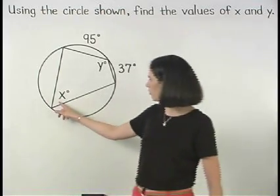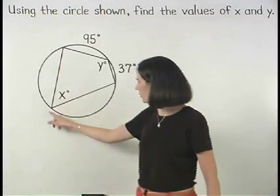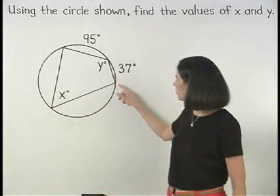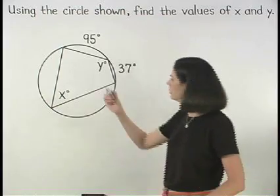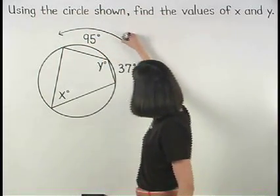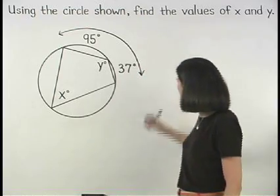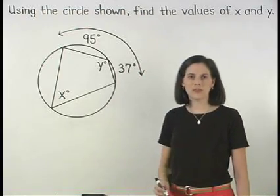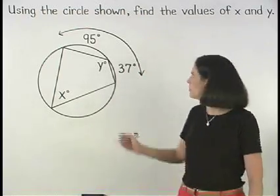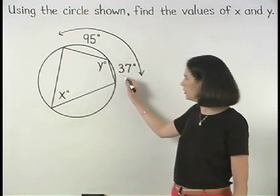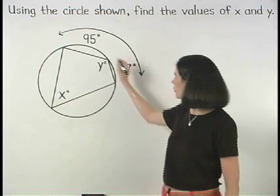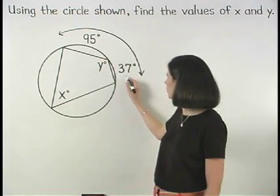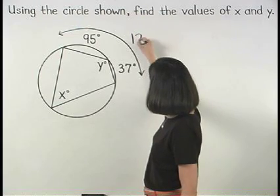Notice that x represents the measure of an inscribed angle, so we know that it equals half the measure of the intercepted arc, which is the arc shown here. Since we're given that the two parts of this arc measure 95 and 37 degrees, then the full arc measures 95 plus 37 or 132 degrees.